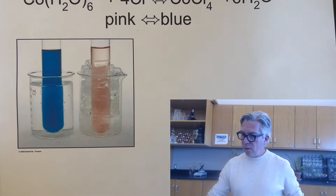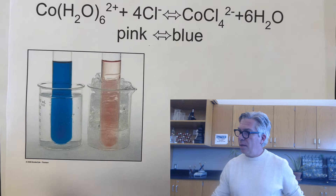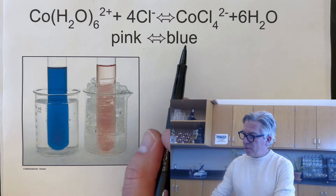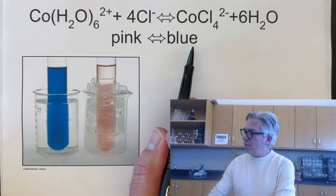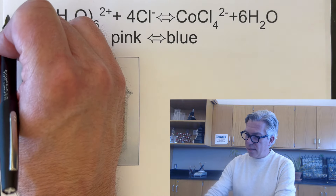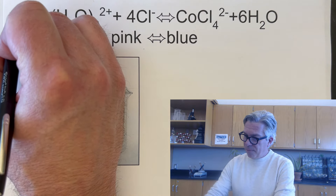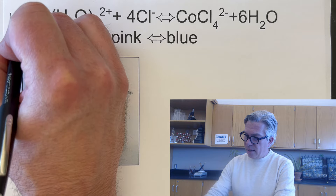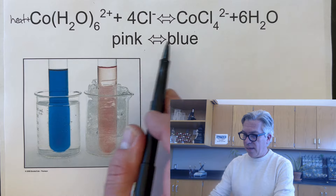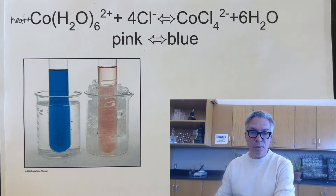For the cobalt chloride equilibrium: at higher temperatures it shifted toward the right-hand side (blue/purple), and at lower temperatures it shifted toward the left-hand side (pink). Heat is a reactant, so this reaction is endothermic as written, because at higher temperatures the equilibrium shifted more to the right.